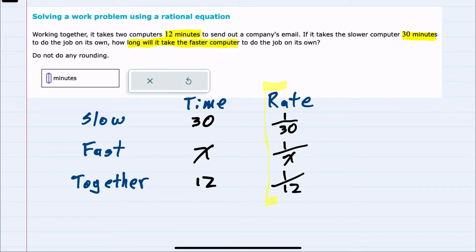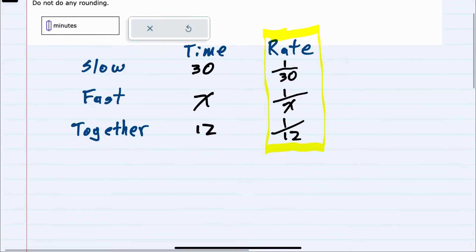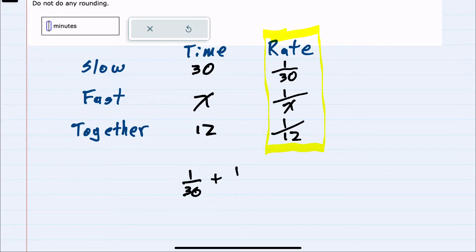The rate column allows me to take the individual rates, 1 over 30, and add in the second computer, 1 over x. And the new rate working together is 1 over 12.